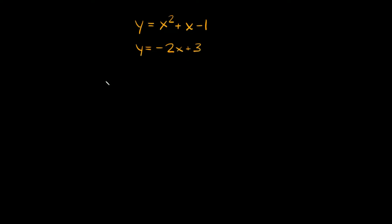So the first thing we can do is set this equal to this right here. We're going to say x squared plus x minus 1 is equal to negative 2x plus 3. Now the second step is just getting all your terms on one side, because we're going to have to factor.